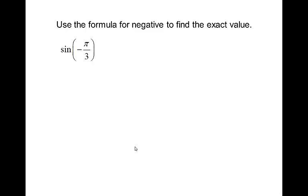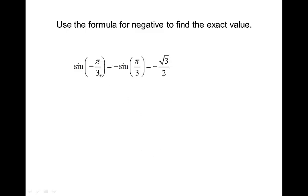Use the formula for negatives to find the exact value — it's up to you whether you want to pull the negative out or not. You can find negative pi over three directly, or pull the negative out and find sine of pi over three and then apply the negative. I'm going to pull the negative out. The sine of pi over three — the sine of 60 degrees — is square root of three over two, and because there's a negative out front, the answer is negative. That makes sense because negative pi over three is down in quadrant four, and sine should be negative.